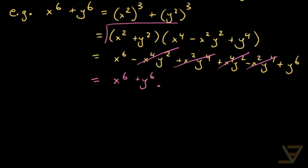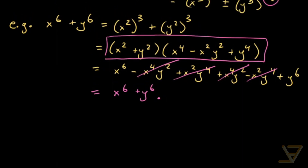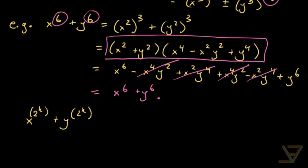So we can get a partial factorization even though the original exponents are even. The only case where we have a real problem and can't factor at all is x to the two to the k plus y to the two to the k — these are powers of two, so there are no odd factors, and this does not factor.